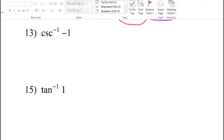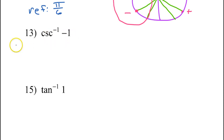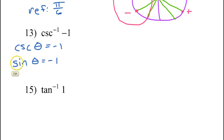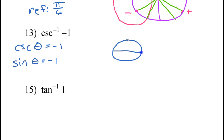Number 13: inverse cosecant of negative 1. You should be asking yourself the cosecant of what angle is equal to negative 1. Cosecant is the reciprocal of the sine function, so it would be the same answer if you asked yourself the sine of what angle is equal to negative 1 — because the reciprocal of negative 1 is still negative 1. So I'm going to think of it this way. I'm thinking that it's going to be a quadrantal angle.